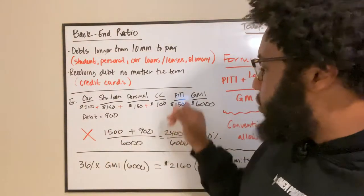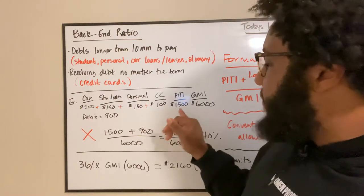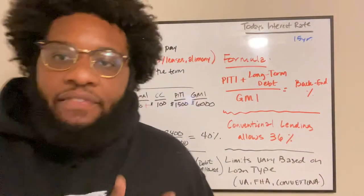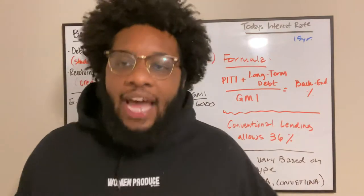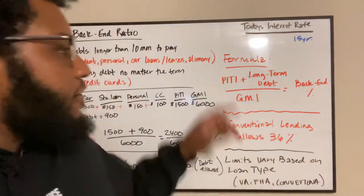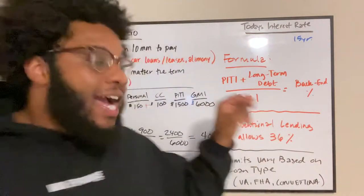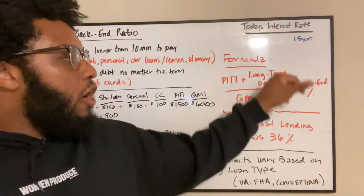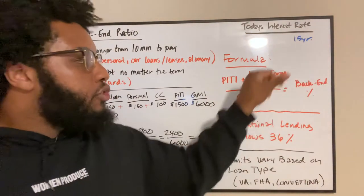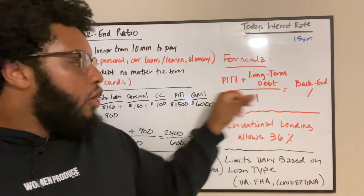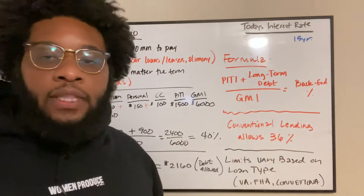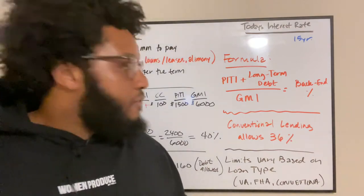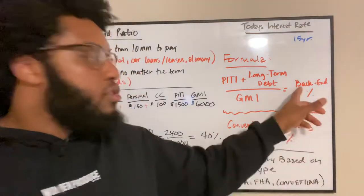Your PITI, as I mentioned, we're going to stay at $1,500. Your gross monthly income has changed — yesterday we used $5,500, today we're using $6,000. So here's the formula: PITI (principal, interest, taxes, and insurance) plus all of your long-term debt payments, all over your gross monthly income — what you bring home every single month gross before taxes — gives you your back-end percentage.